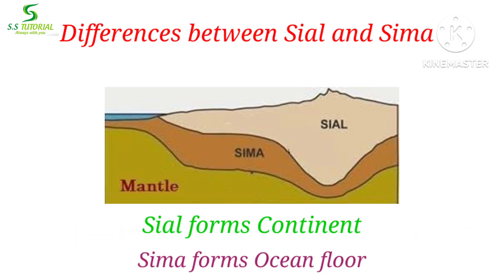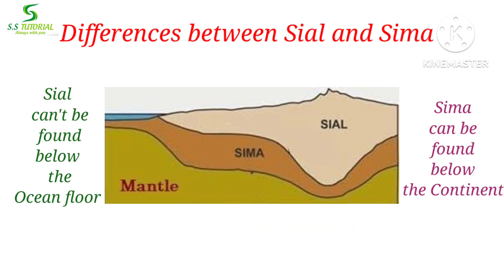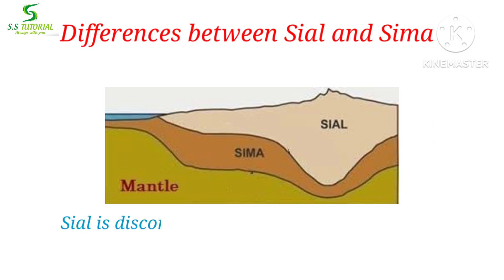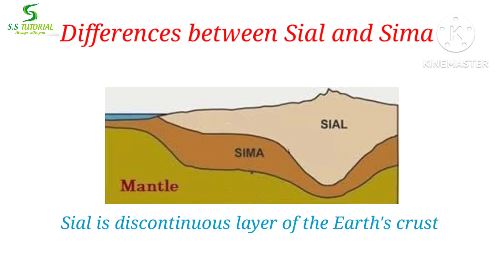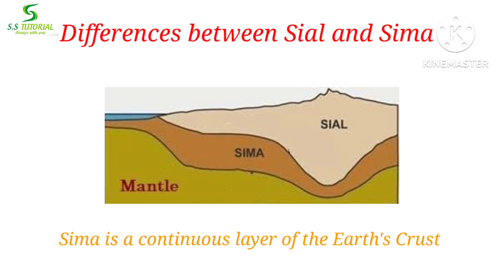Sial forms continents, but Sima forms the ocean floor — meaning continents are made of Sial and ocean floors are made of Sima. Sima can be found below the continents, but Sial cannot be found below the ocean floor. Sial is the upper layer which forms a discontinuous cover over the earth crust and is completely absent from the ocean floor. Sima, on the other hand, is a continuous layer that can be found in the ocean floor as well as below the continents.